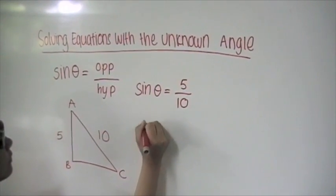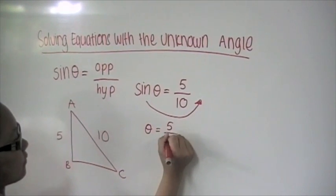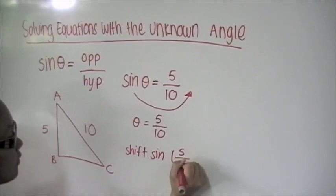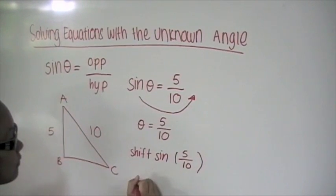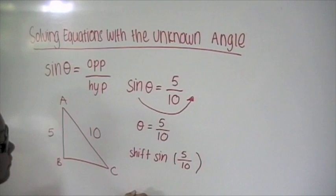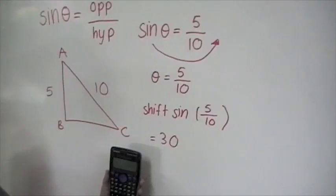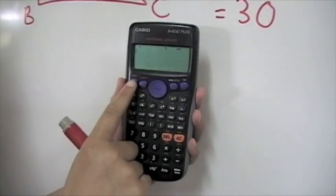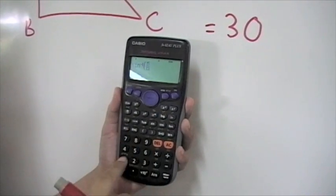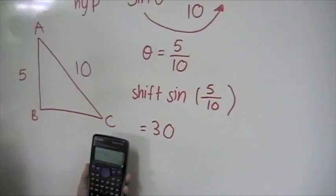In order to find the missing angle, we must move sine to the other side, leaving the unknown by itself. In the calculator, we type in shift sine bracket 5 over 10 bracket. The shift is necessary as sine moves to the other side, making it become inverse sine (to the power of negative 1). The answer should be 30. Press shift sine bracket 5 over 10 bracket equals, and the answer should be 30.